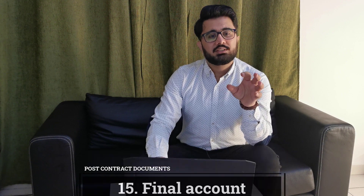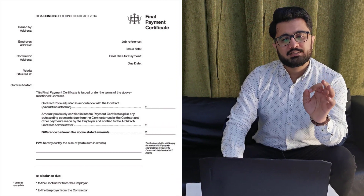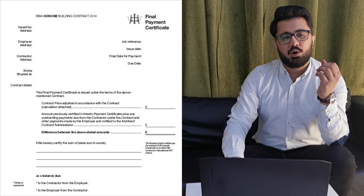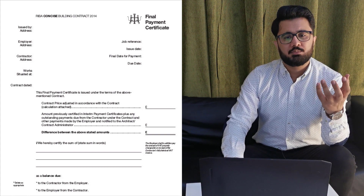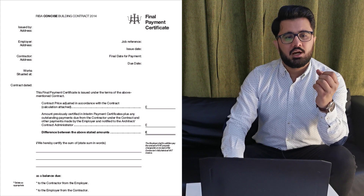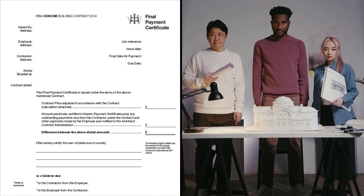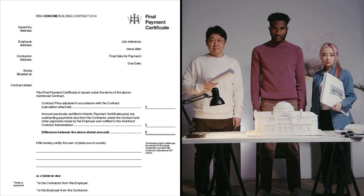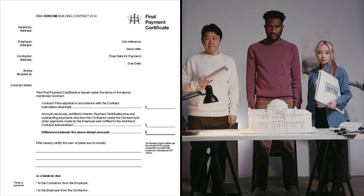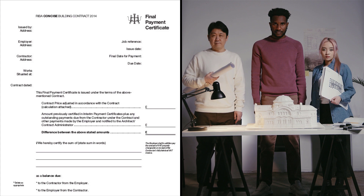Preparing the final account — the final account is the closing payment for the contract. The QS generally prepares this using the original contract sum as the starting point. The employer is also responsible for the final account, and the best approach is for the client's QS and the contractor's QS to work together to produce an agreed account, which will generally serve as the starting point for final account discussions.